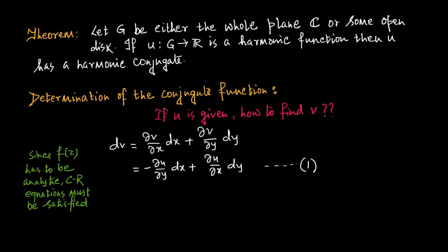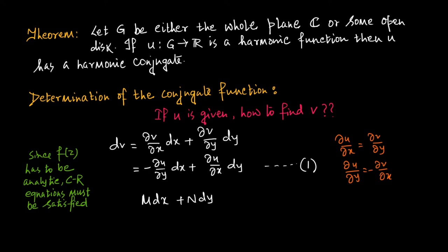Since f(z) has to be analytic, the CR equations must be satisfied. Therefore, del v del x equals minus del u del y and del v del y equals del u del x. So dv can be written as: dv equals minus (del u del y) dx plus (del u del x) dy. Let us call this equation number one. For reference, the CR equations give us del u del x equals del v del y and del u del y equals minus del v del x.